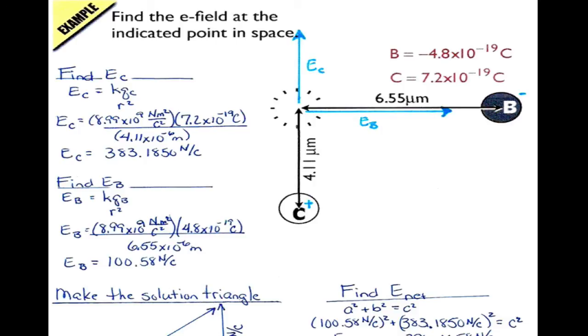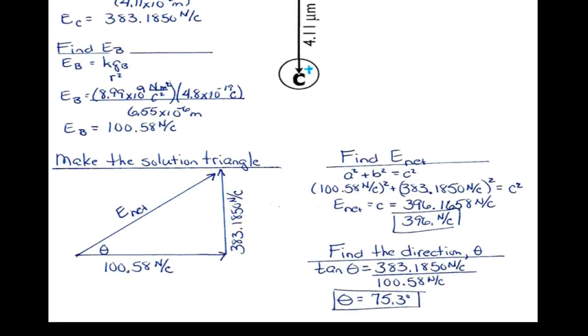So I've told you, the reader, what I'm finding. I'm finding the electric field strength. I'm finding electric field strength due to B. And then if I scroll down the page a little bit, you can see how I'm making the solutions triangle. And I'm finding the net force, and I'm finding the direction of theta. So these are all the steps that I'm looking for on your paper.